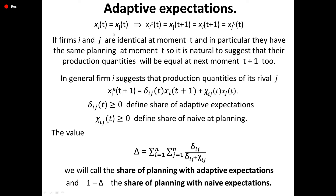Adaptive Expectations. If firms i and j are identical at moment t and have the same planning, it is natural to suggest their production quantities will be equal at the next moment t+1. In general, firm i suggests the production quantity of its rival j according to a formula where delta_ij(t) >= 0 is the defined share of adaptive expectations and chi_ij(t) >= 0 is the defined share of naive planning. We call delta the share of planning with adaptive expectations and (1 - delta) the share of planning with naive expectations.